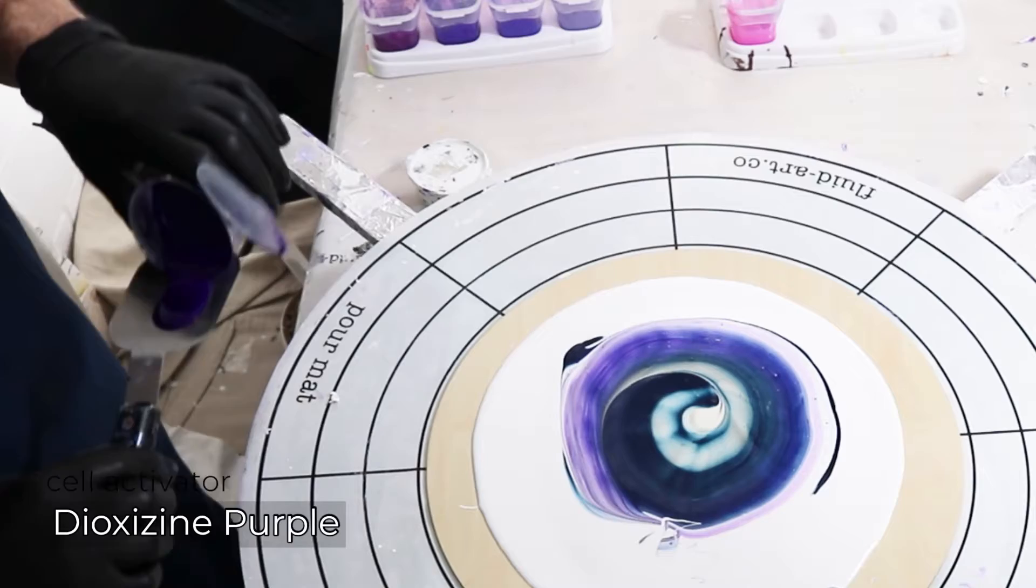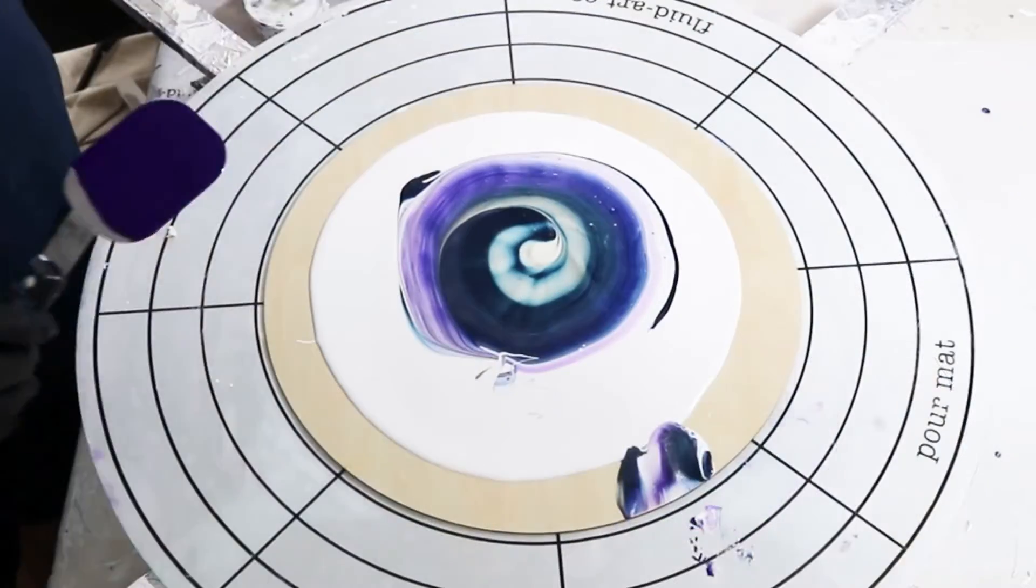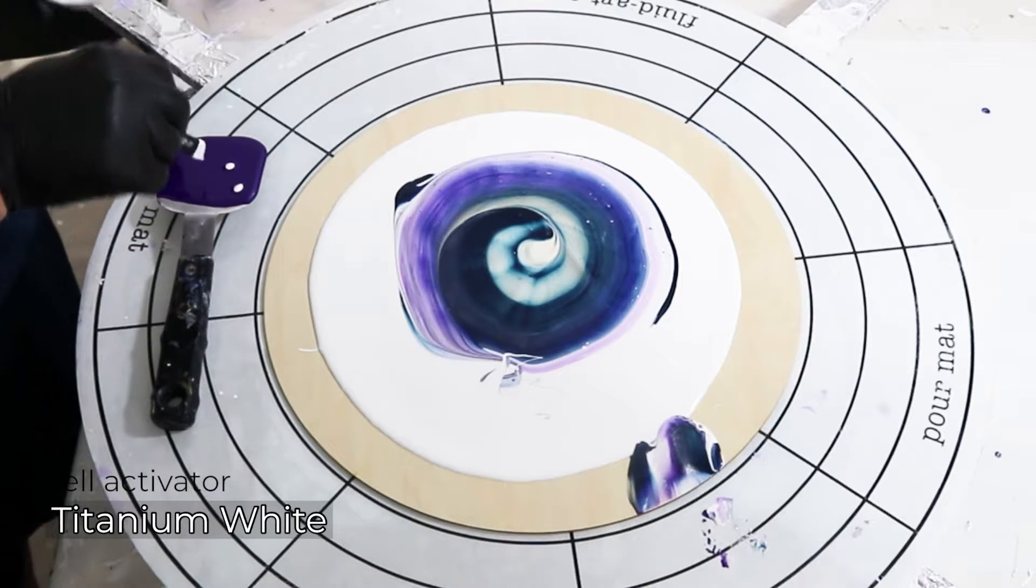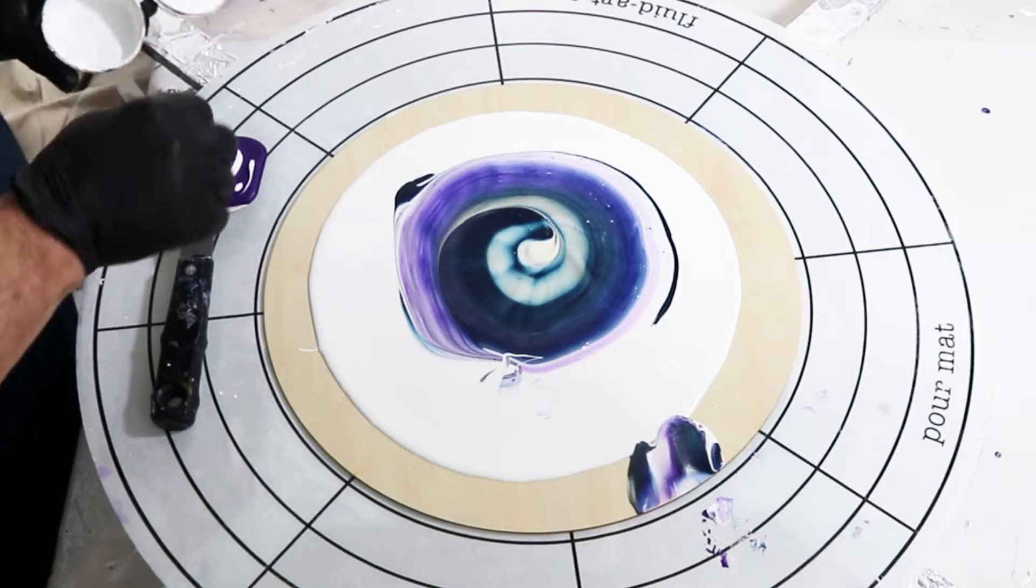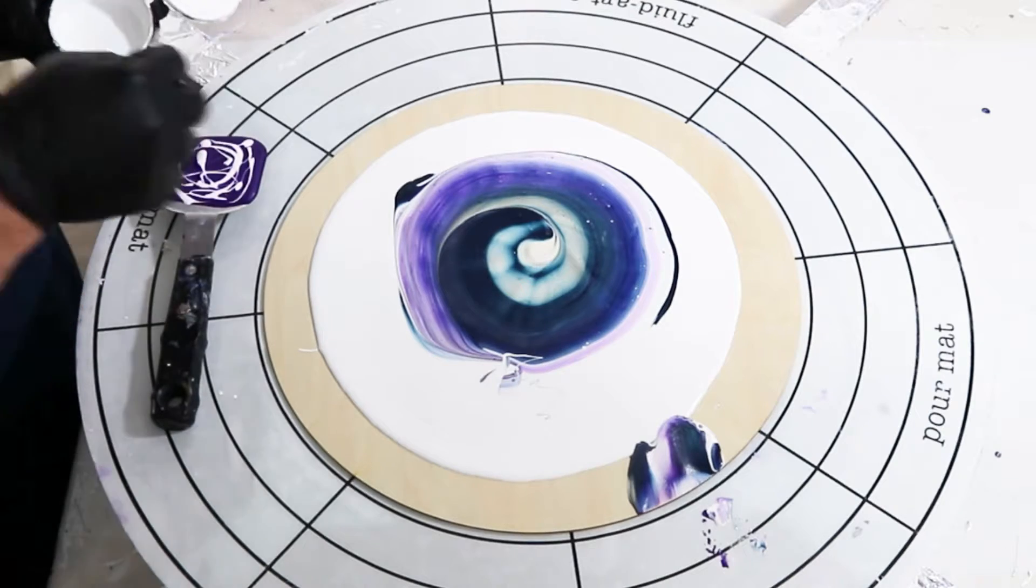I'm loading the swiping tool with my first cell activator, which is dioxazine purple, and then some titanium white. The purple is Joe Sonja and the titanium white is Amsterdam.